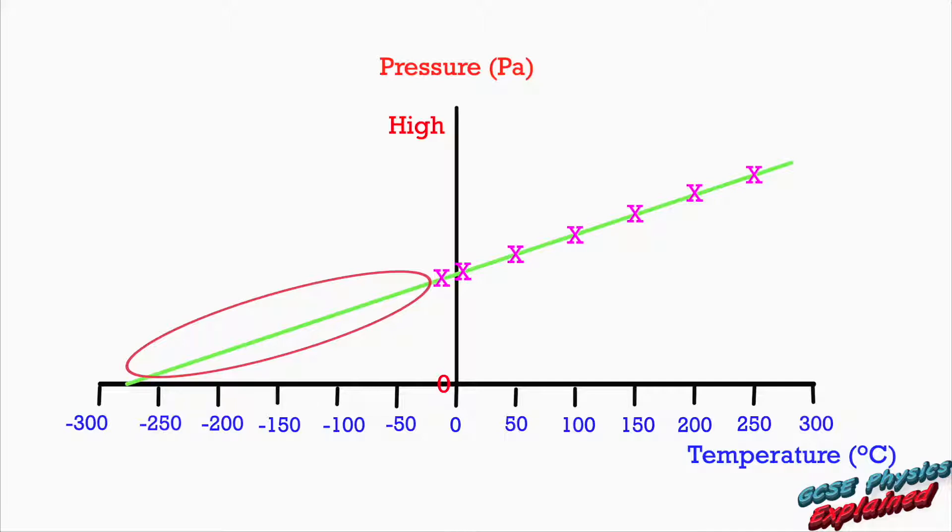Extrapolating doesn't always work, but Kelvin gave it a shot anyway. Lord Baron Kelvin, to give him his full name, followed the pattern on his graph and his results suggested that the pressure would be zero at minus 273 degrees Celsius. He called this temperature absolute zero.